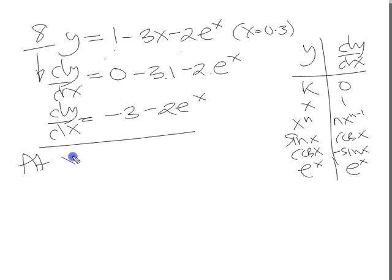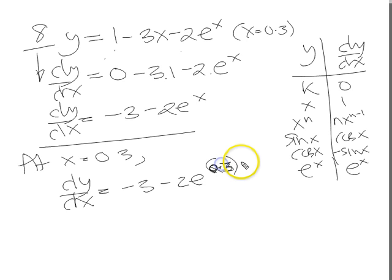Now we input the value at x equals 0.3 there. So let's evaluate the derivative at that value. Minus 3 minus 2e to the x, we can write down. Now our input value, we're overseeing x on the right-hand side. We need to overwrite that with 0.3. There we go. Just put it in there.